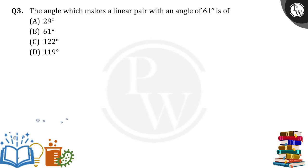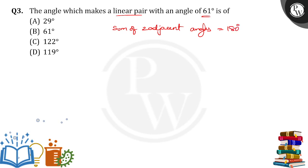Hello everyone. The angle which makes a linear pair with an angle of 61 degrees is equal to how much? So linear pair means what? Sum of two adjacent angles should be supplementary, which means sum of two adjacent angles is equal to 180 degrees.